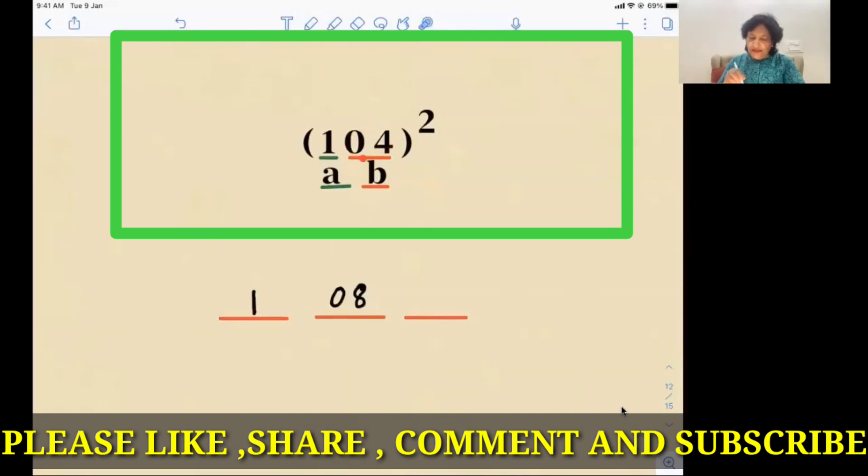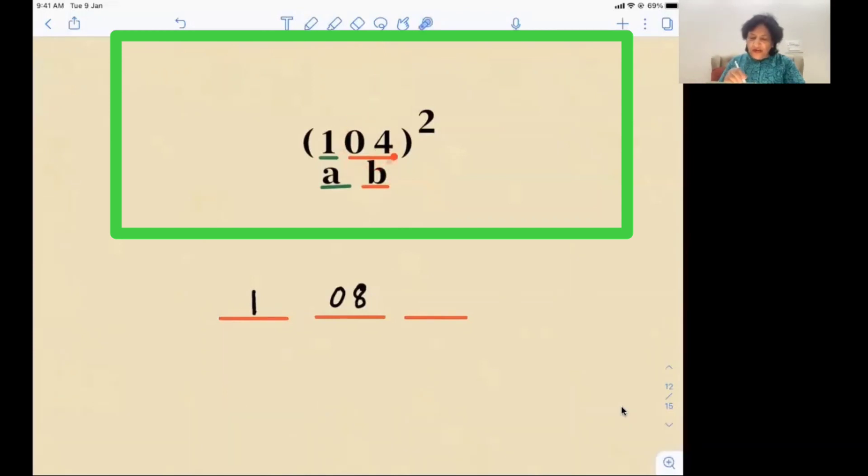So next, the last step would be the square of zero four, that is b squared. So square of zero four: four is sixteen. Now in this case we will maintain two digits in every section, this one from the right. So we have answer one zero eight one six. This is our answer.